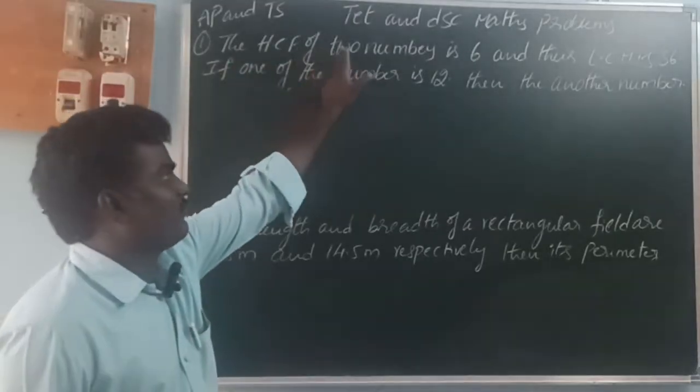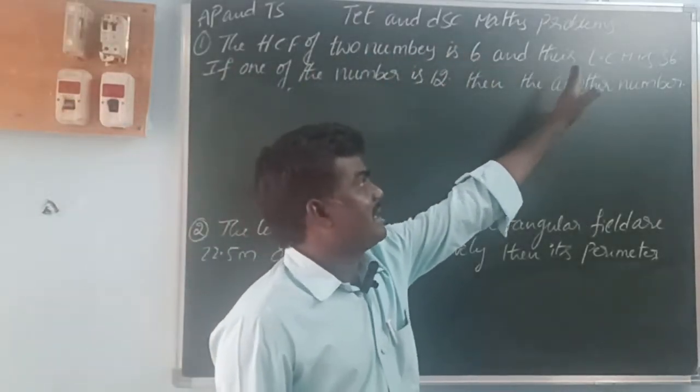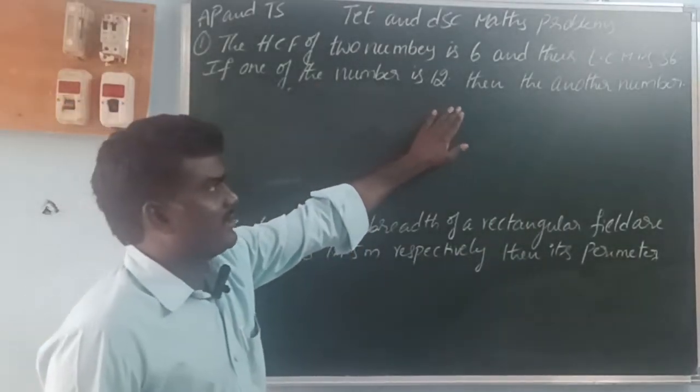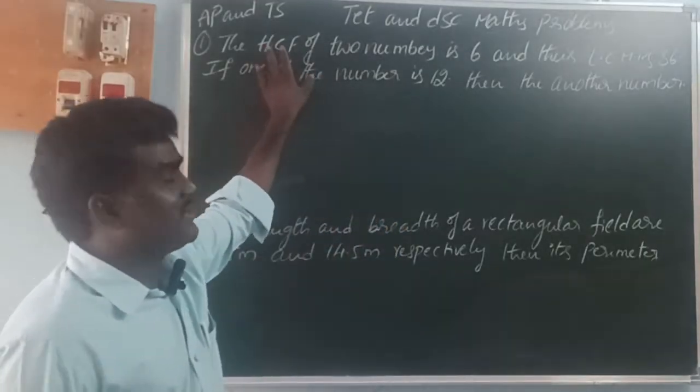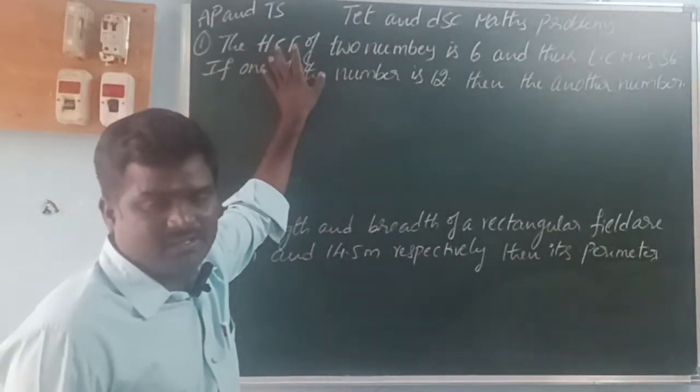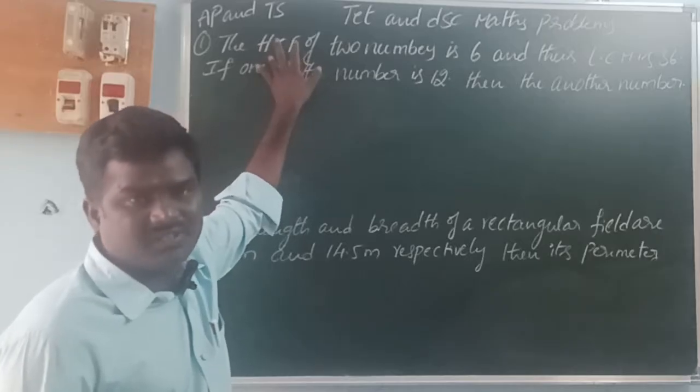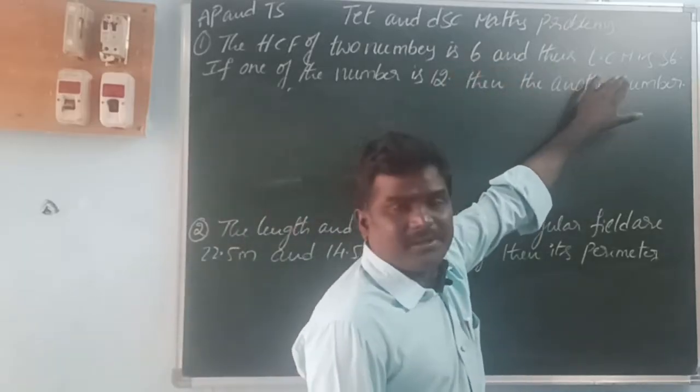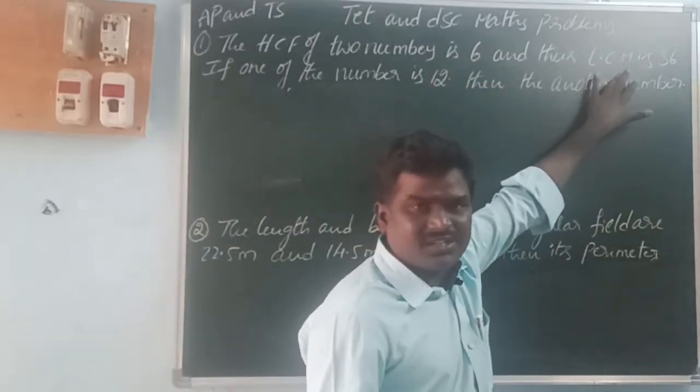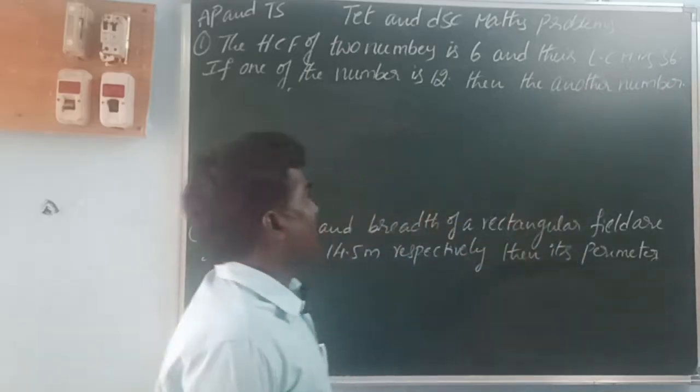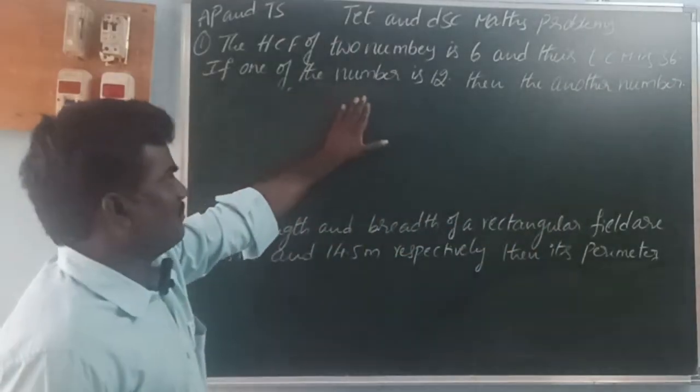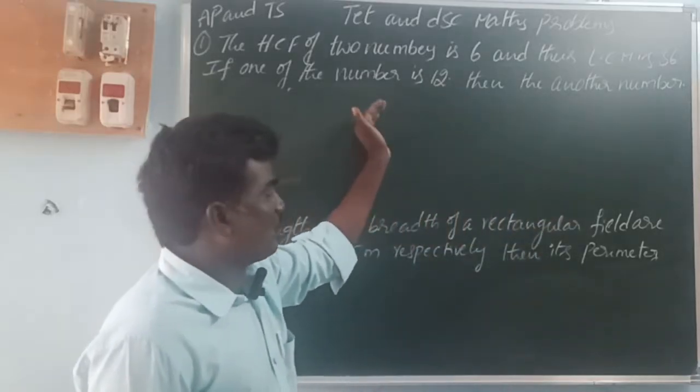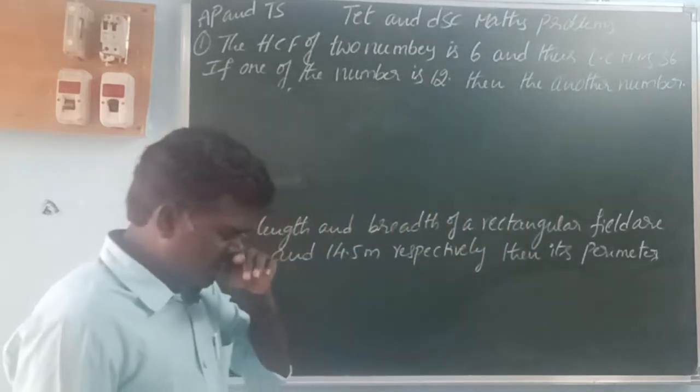First problem: The HCF of two numbers is 6 and their LCM is 36. If one of the number is 12, then the another number is what? HCF means highest common factor is 6 and their LCM is 36.